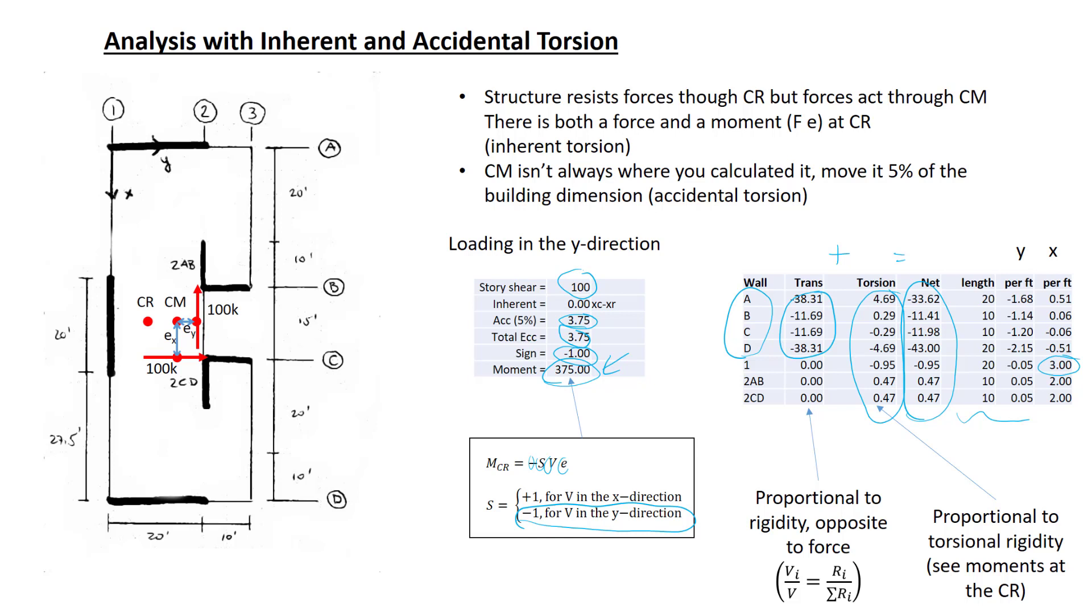So we finish this topic. If we had a multi-story building, we would do this at every story. This finishes the topic of analysis with inherent and accidental torsion. After this, we'll need to take the forces on each story, compute diaphragm shear, diaphragm moment, look at collector forces, chord forces, and so on. That'll be the topic of a subsequent video.